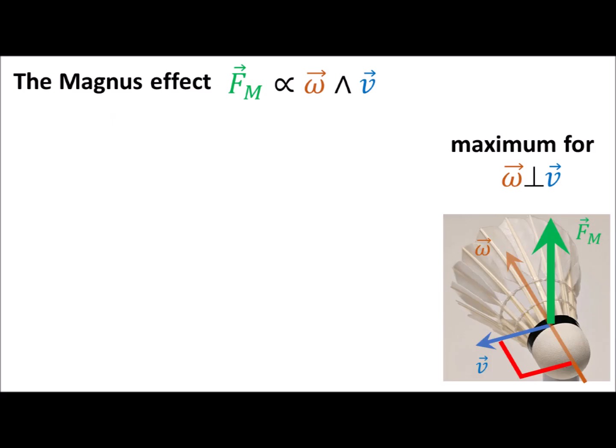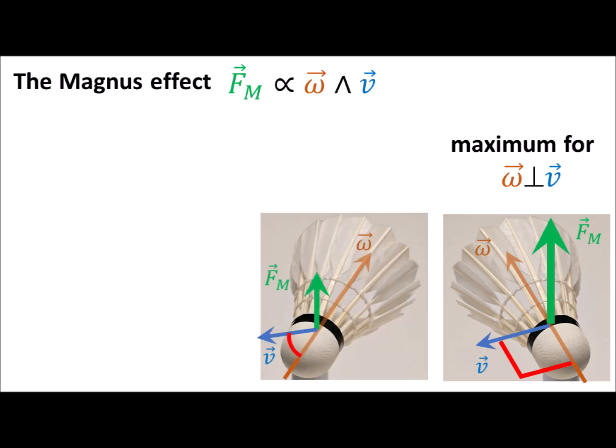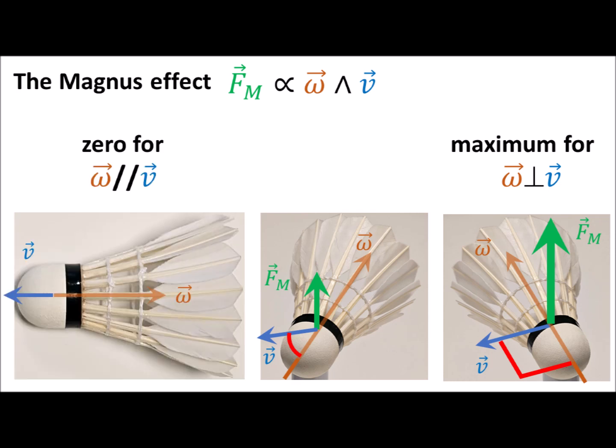When spinning axis and velocity are perpendicular, the Magnus force is maximum. When the angle deviates from 90 degrees, the Magnus force decreases. When the spinning axis is aligned along velocity, the Magnus force vanishes.